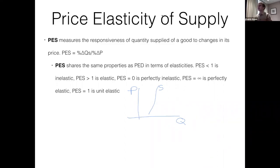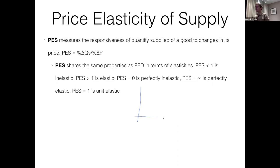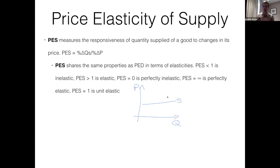Now let's look at what an elastic supply curve looks like — where PES is greater than one. An elastic supply curve is essentially the opposite: we're looking at a curve that is extremely responsive to change. The price changes and the quantity changes by massive amounts. A supply curve that's extremely elastic is going to be extremely flat — the price changes by even the tiniest bit and supply goes shooting off. This would be an elastic supply curve.